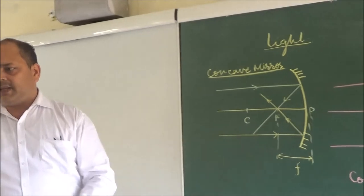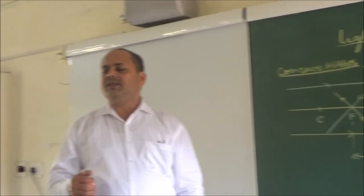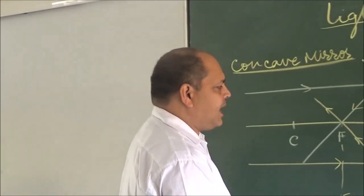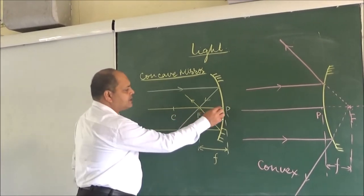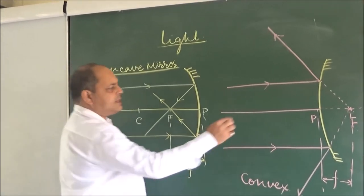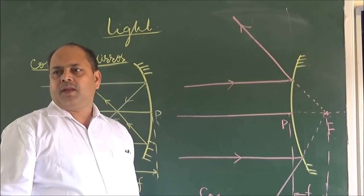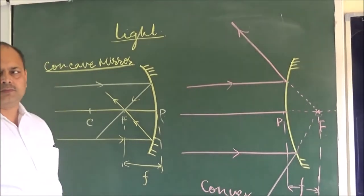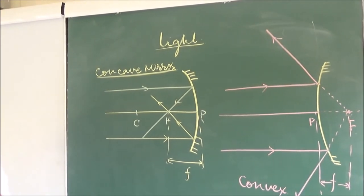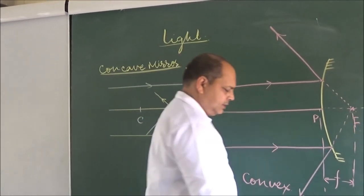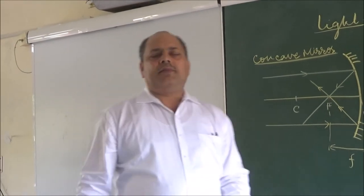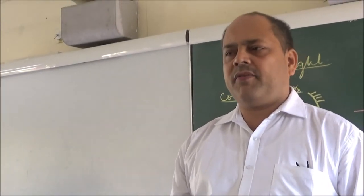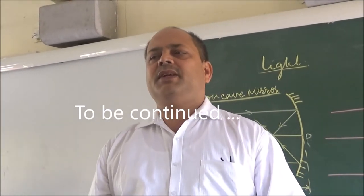After this, we will study the sign convention. Sign convention means which direction we take as positive and which direction we take as negative. In the case of a concave mirror, the focal length is negative, while for the convex mirror it is positive. Next, we will find the position of images formed by concave and convex mirrors when an object is placed before the mirror.